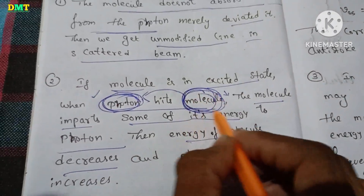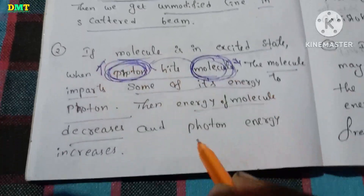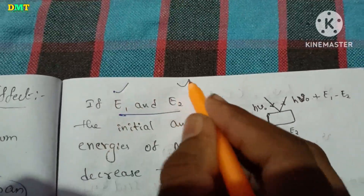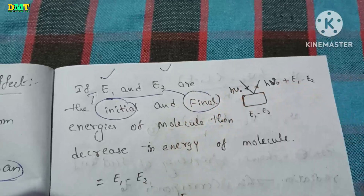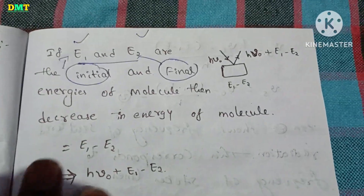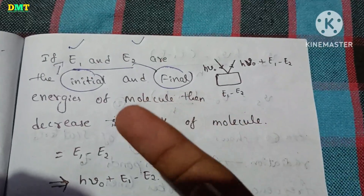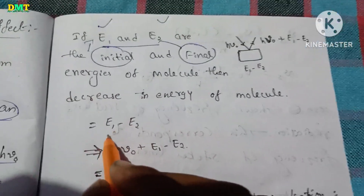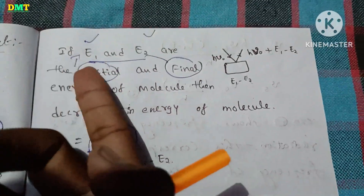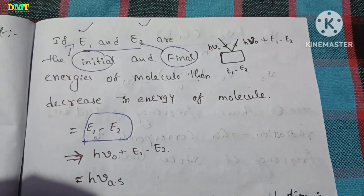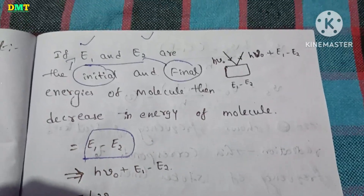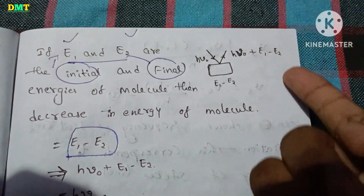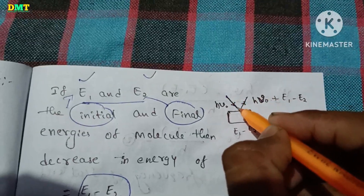Then the molecule gives some energy to the photon and the photon energy increases. When the molecule changes its internal energy state, it has more energy than before. So let's add E1 and E2 as the energy levels. The energy difference is E1 minus E2. The photon energy increases to H·mu₀ plus E1 minus E2.